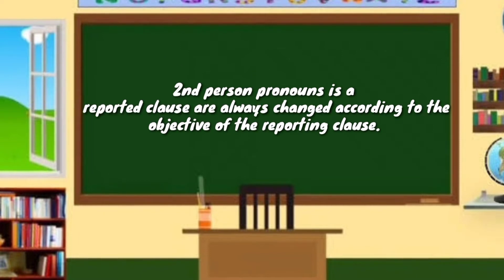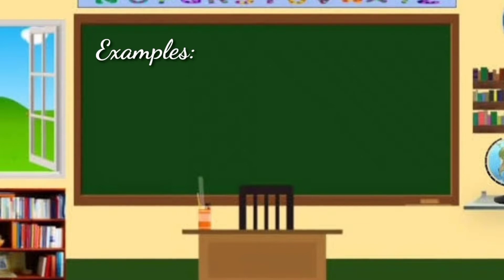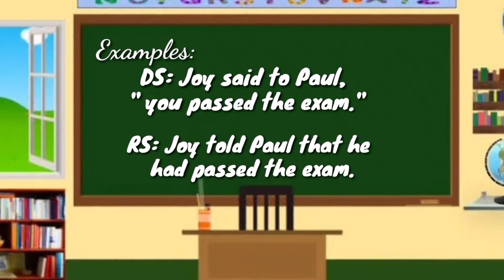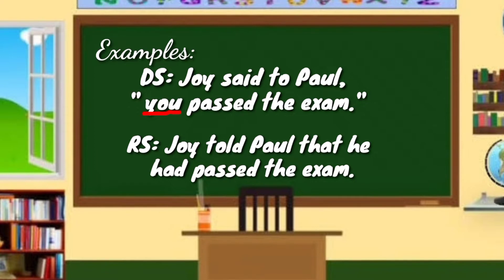Second person pronouns in the reported clause are always changed according to the object of the reporting clause. For example — DS: Joy said to Paul, 'You passed the exam.' RS: Joy told Paul that he had passed the exam. In this sample, the second person pronoun 'you' is changed according to the object of the reporting clause — Joy said to Paul — the object is Paul, requiring a third person masculine pronoun 'he.'